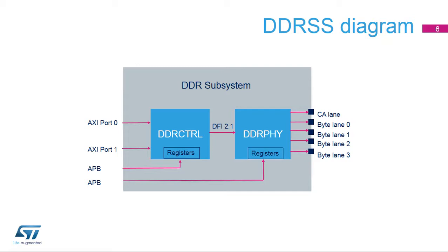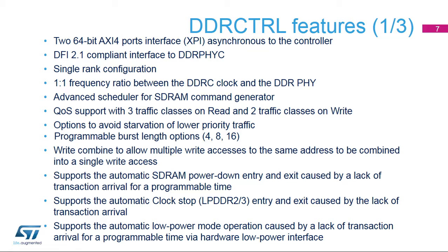DDRCTRL and DDRPHYC have their own control registers. DDRCTRL is connected to the SOC backbone by two AXI ports. DDRPHYC has a slice-based architecture with a command address bus and four byte lanes. The main DDRCTRL features include two 64-bit AMBA4 AXI-4 port interfaces, or XPI, asynchronous to the controller; a 64-bit DFI 2.1 compliant interface to DDRPHYC; an advanced scheduler and SDRAM command generator; and a 1-to-1 frequency ratio between the DDRC clock and the DDRPHY, i.e., SDR mode.